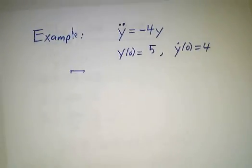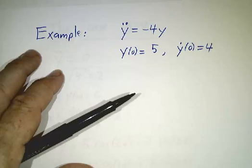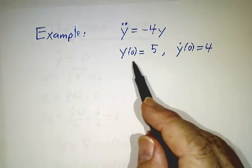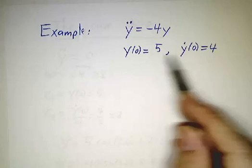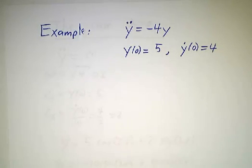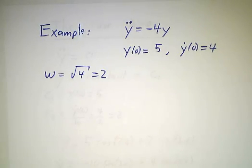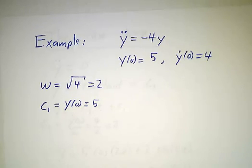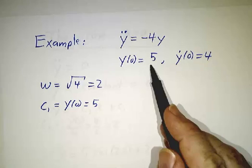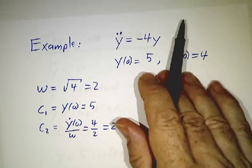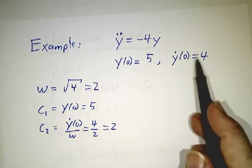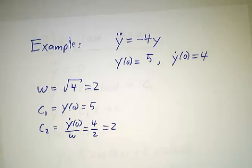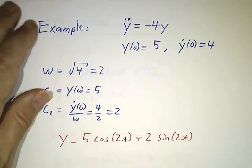In our example, let's suppose the second derivative is minus 4y and let's give it initial conditions: y of zero is five, y dot of zero is four. Then omega is the square root of minus lambda, so that's two. And c1 is the initial value, that's five. c2 is the initial derivative divided by omega, so that's two. And there's a solution.